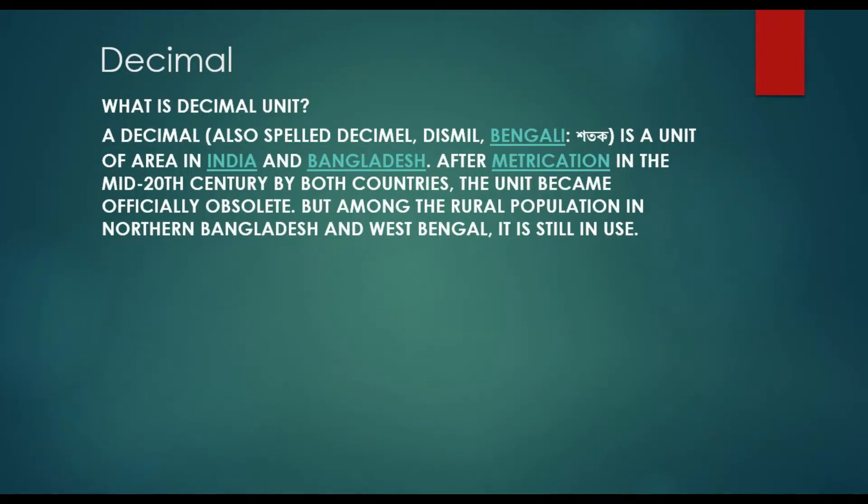Decimal. What is decimal unit? A decimal, also spelled decimel, dismile, is a unit of area in India and Bangladesh.